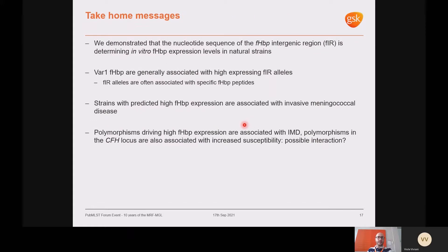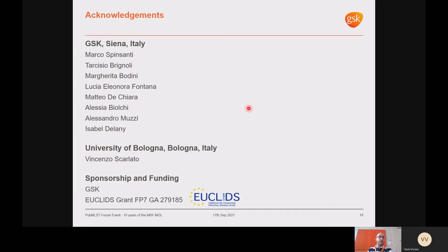To conclude: we demonstrated that the nucleotide sequence of the FHBP intergenic region determines in vitro FHBP expression levels in natural strains; FHBP variant 1 strains are generally associated with high-expressing FIR alleles; FIR alleles are often associated with specific FHBP peptides; and strains with predicted high FHBP expression are associated with invasive Meningococcal disease. Since polymorphisms in the host complement factor H locus are associated with increased disease susceptibility, future work could explore interactions between these two factors. We thank all contributors and the EUCLID grant for sponsoring this work.